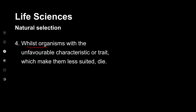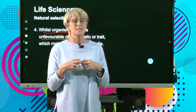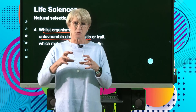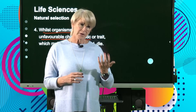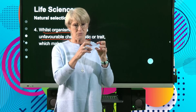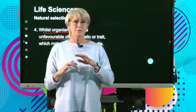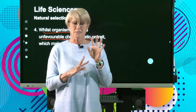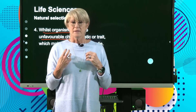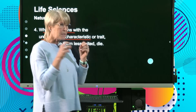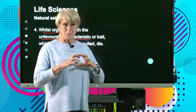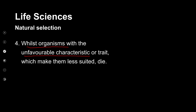Those organisms with the unfavorable characteristic — one that doesn't allow them to be suited to the environment — in our example of the worms, the brightly colored green, yellow, or blue worm as opposed to the brown worm living on the stem of a tree — that would not be suitable. They become conspicuous, not camouflaged, so the predator birds can see them easily and eat them, so they die off.